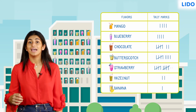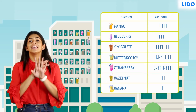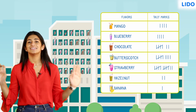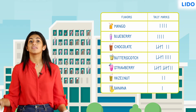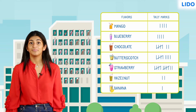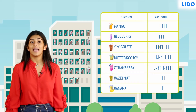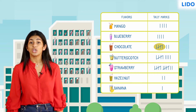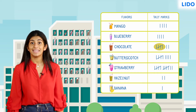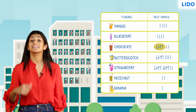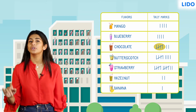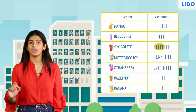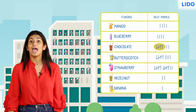Continuing in this method, I have completed the entire table. Remember, we add a diagonal line on top of the four standing lines to imply the fifth count of a particular category.